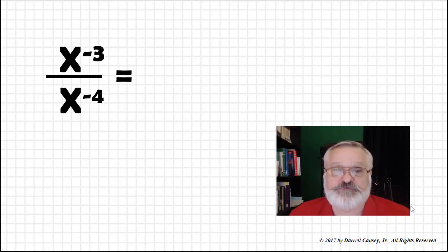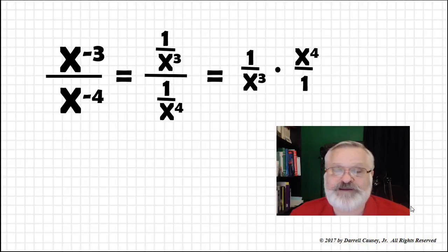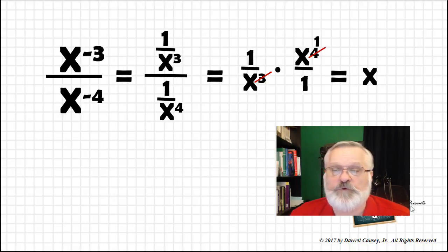And then x to the negative three over x to the negative four. That's the same as a complex or compound fraction. And we can rewrite it as one over x cubed over one over x to the fourth. And we know that we can use the rule for dividing fractions. Flip over the denominator and multiply. So that's going to give us x to the one, which when reduced is the same as x.